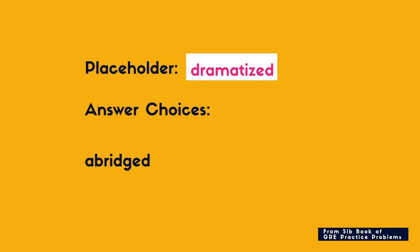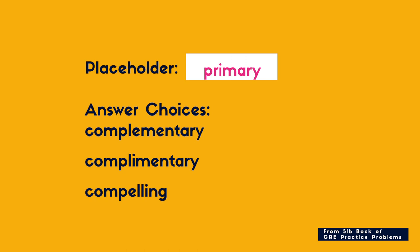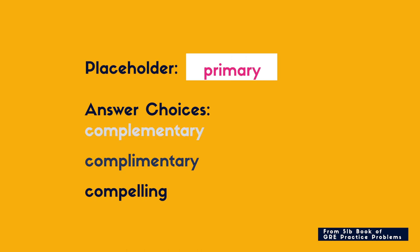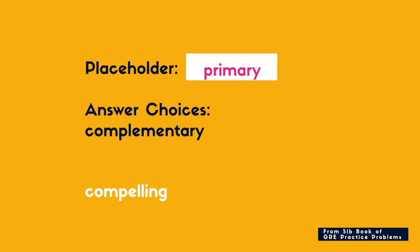Looking at blank number two, we've got three options: complementary, complimentary, and compelling. Watch out for the homonyms — it's really important to know the difference between the two. 'Complementary' with an E is something that goes with something, whereas 'complimentary' with an I means something that's free. I know this sentence is not talking about something that's free, so I'm going to eliminate that. 'Compelling' is great, but it doesn't really fit the structure of the sentence that's set up. So I'm going to cut that out as well. 'Complementary' definitely goes well with this sentence.